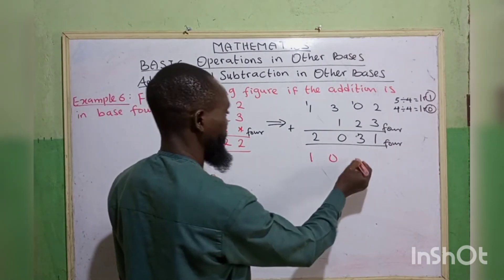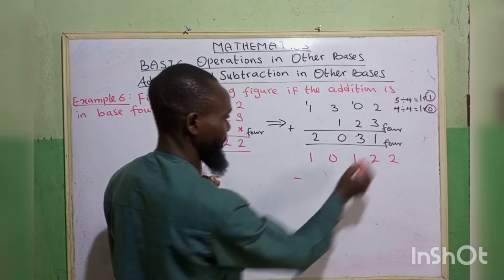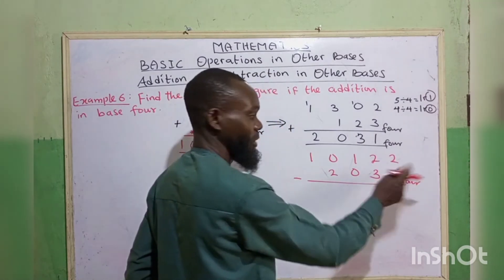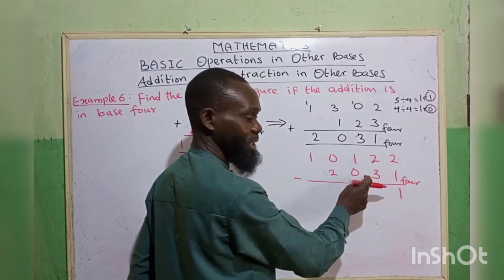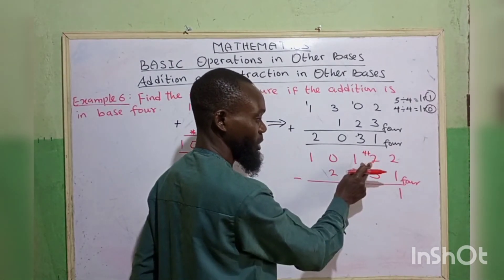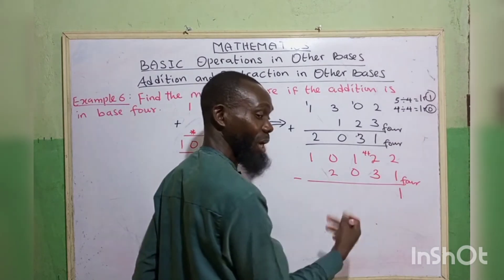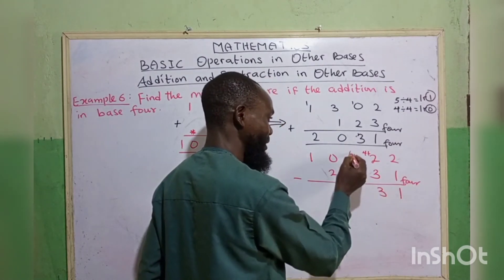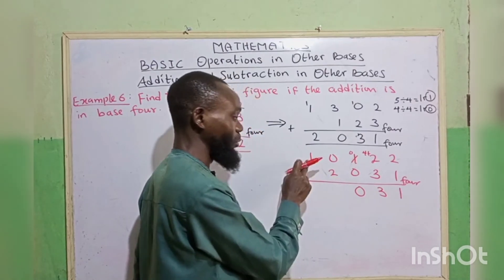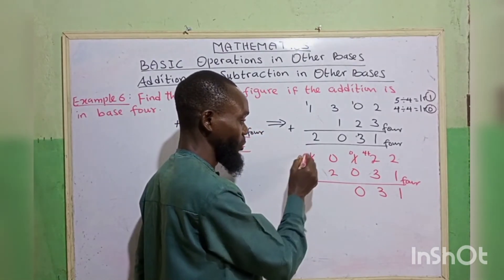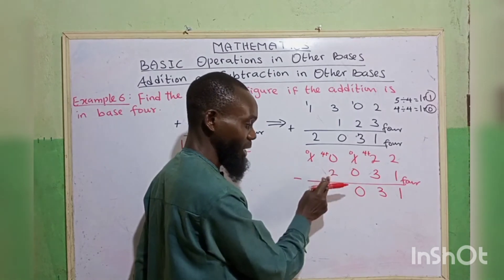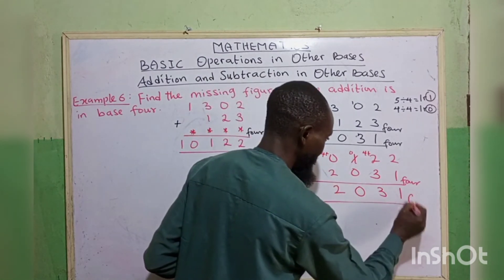Now we subtract 2031 from the final answer 10122 in base 4 to find the missing number. 2 minus 1 gives 1. 2 minus 3 is impossible; borrow 1, it becomes 4, so 4 plus 2 gives 6. 6 minus 3 gives 3; write 3. Next column has been reduced to 0. 0 minus 0 gives 0. 0 minus 2 is impossible; borrow from the next digit (which reduces to 0), giving 4 plus 0 equals 4. 4 minus 2 gives 2. The missing figure is found, all in base 4.